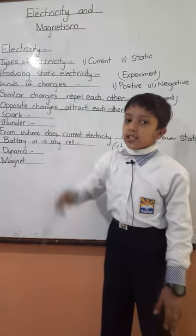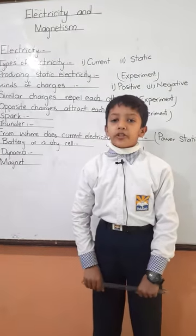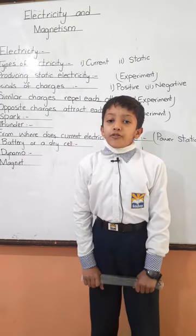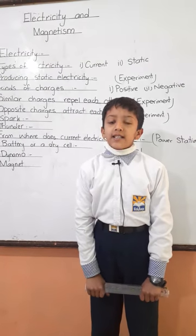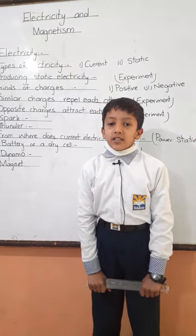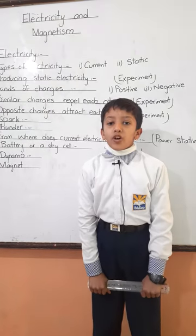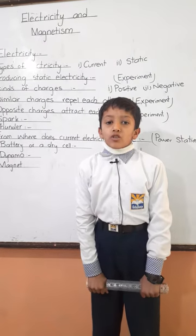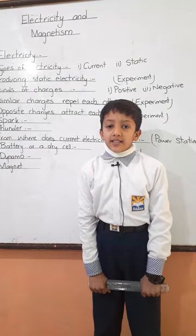Electricity is a form of energy and flow of charges. Current electricity is the electricity which flows through wires.